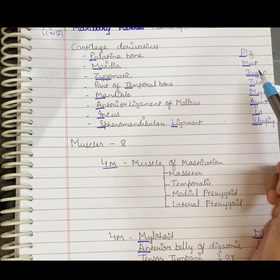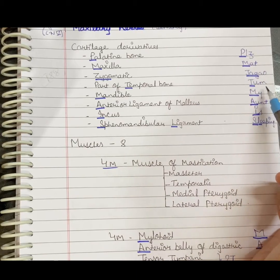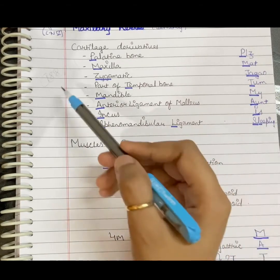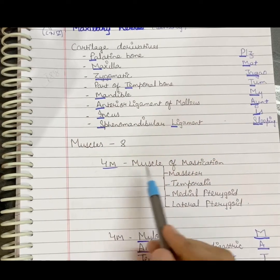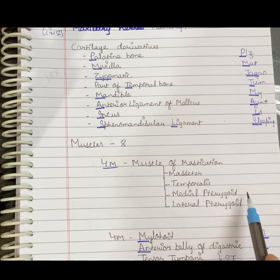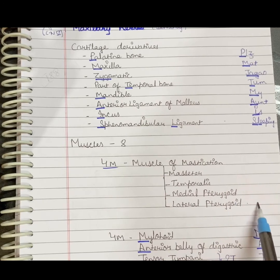These can be remembered as Please My Aunt Is Sleeping. And eight muscles can be remembered as 4M for muscles of mastication: masseter, temporalis, medial pterygoid, and the lateral pterygoid.